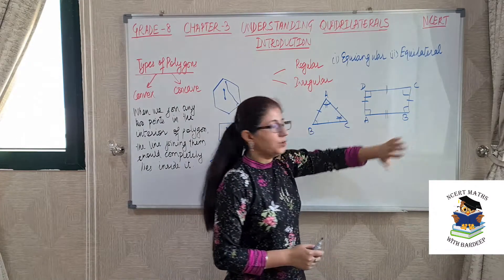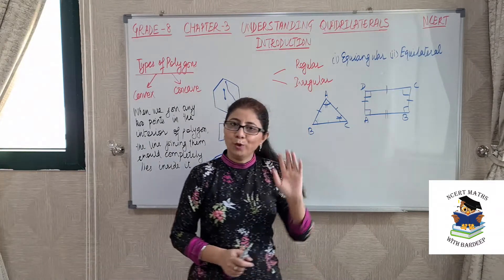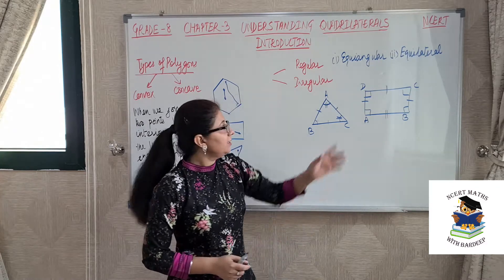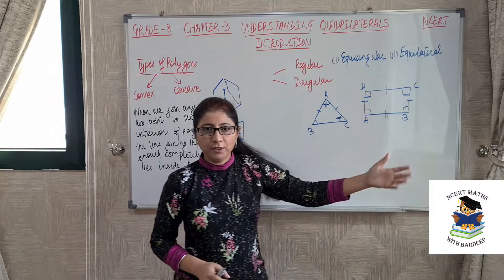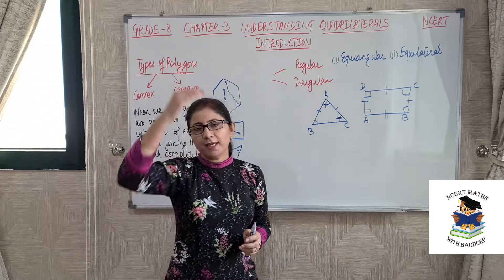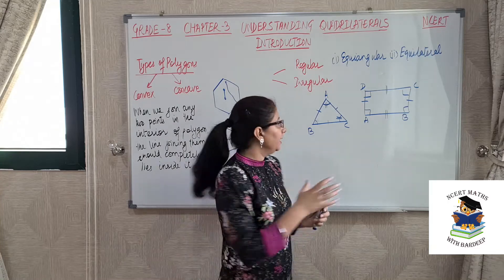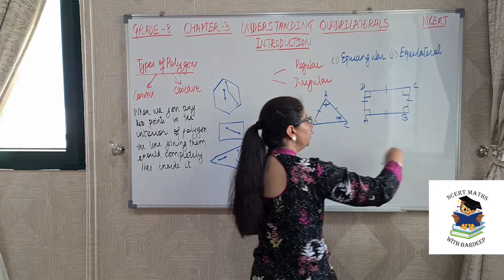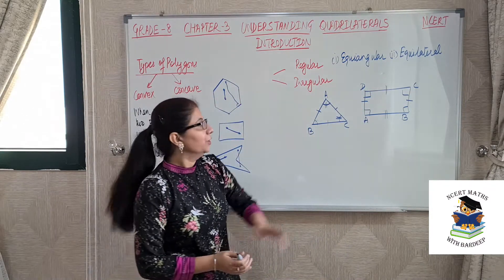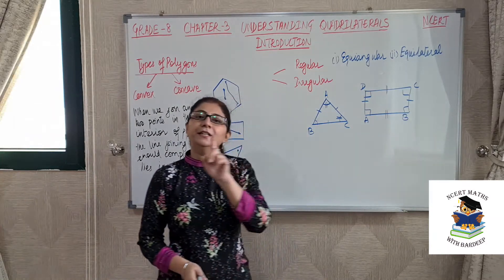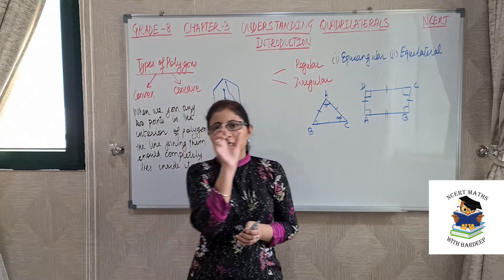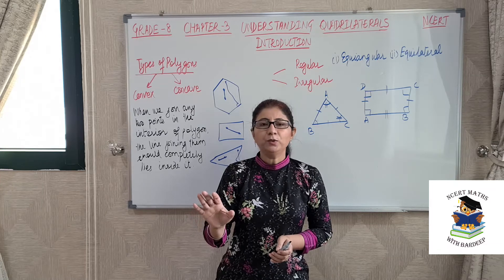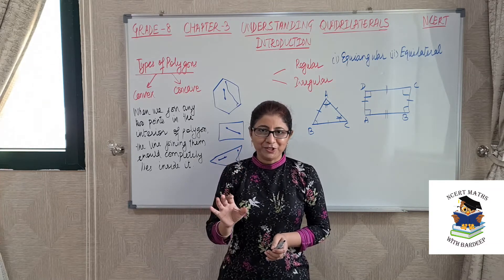Next, let us consider rectangle ABCD. In a rectangle, what are the properties? We know that each angle of the rectangle is always 90 degrees. Since all angles are 90 degrees, this is equiangular. But only opposite sides of a rectangle are of equal length — AB = DC and AD = BC. Since all sides are not equal, we cannot say this is equilateral. So this is a polygon but an irregular polygon. Whenever you see the term regular polygon, it means all sides are of equal length and all angles are of equal measure.